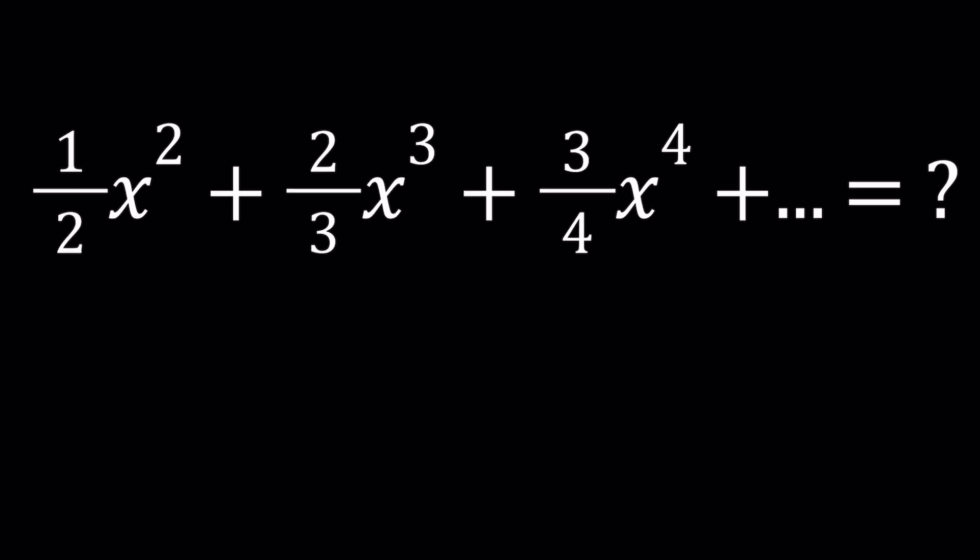So we have this interesting sum where we have powers of x multiplied by fractions, such as 1 half, 2 thirds, 3 fourths, 4 fifths, so on and so forth. So what do you notice about this? One of the things you need to think about is we're looking for a pattern, right? So what's the pattern? Well, if you pay attention closely,